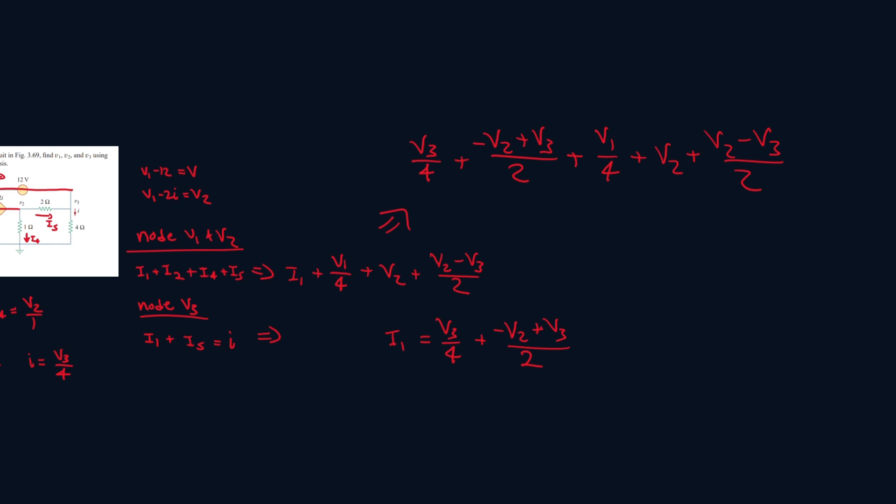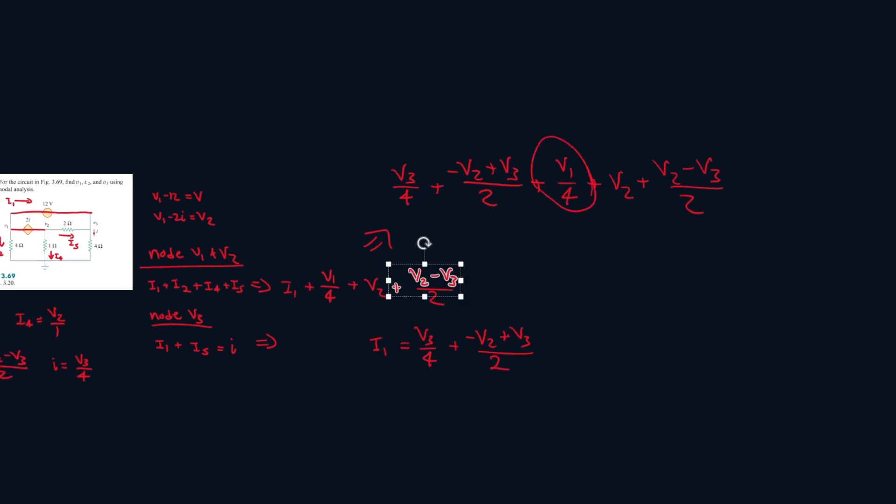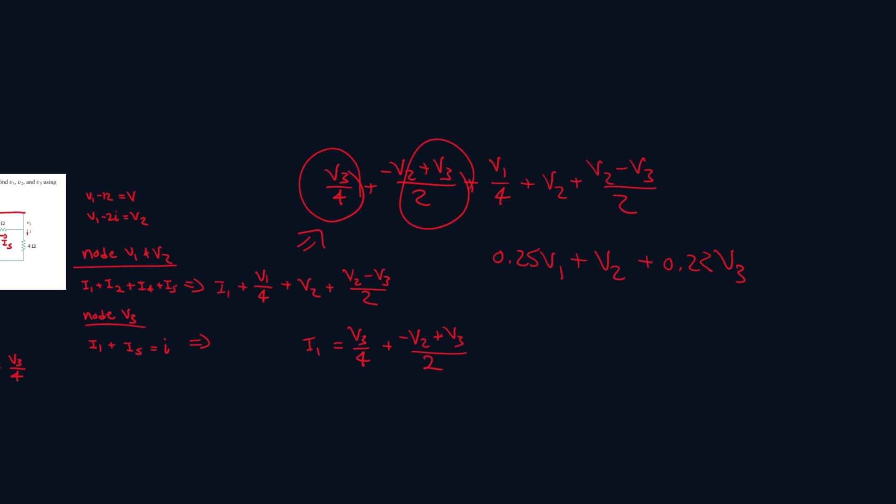And now let's break this equation down even more. So we're going to simplify this. So there's v1 over 4, so that's just 0.25 v1. Then we have minus v2 over 2 plus v2 plus v2 over 2. So adding all of that up, you just get v2. Then we have v3 over 4 plus v3 over 2 minus v3 over 2. That's 0.25 v3. And this will be equal to 0.